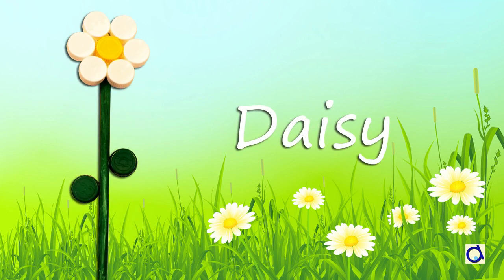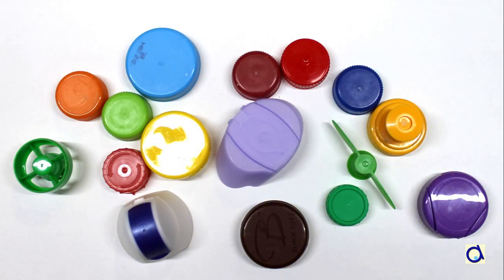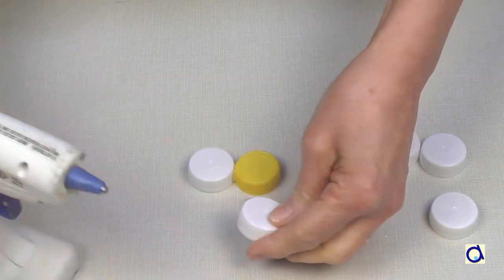Bottle caps come in all kinds of colors and sizes, so there is enough choice for everyone to get creative. I choose to use white caps to make the petals of the flower and a center cap of yellow color for the heart of the flower.